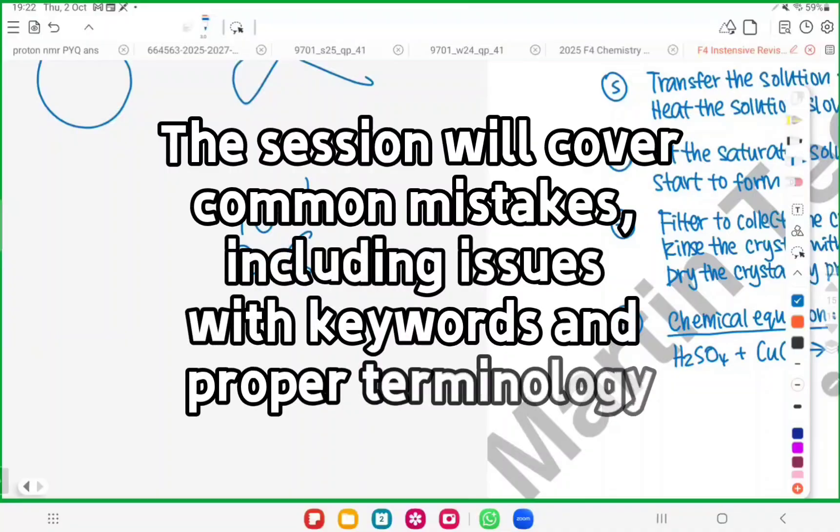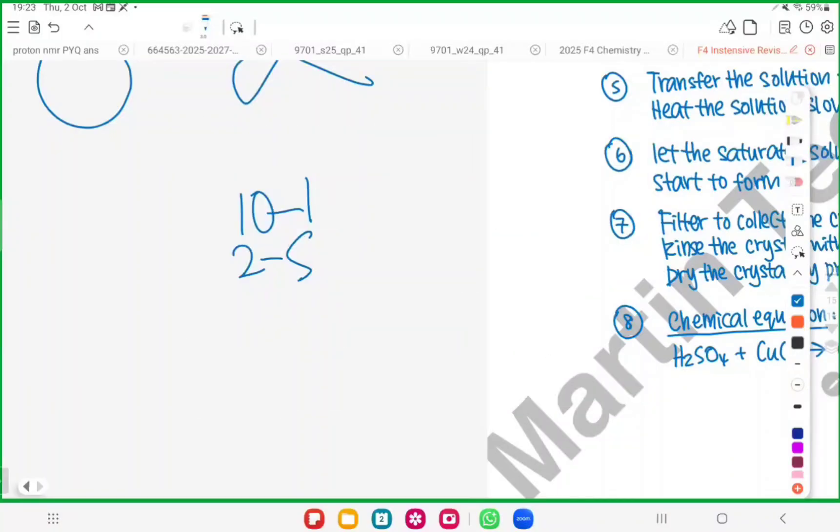Like why sometimes you forget to write the word 'atom', or why sometimes you write the word 'element' and it's not acceptable. Just because of keywords. Why the words 'reactive' and 'electropositive' make a big difference. Sometimes just because of one wrong keyword, you don't get the marks.